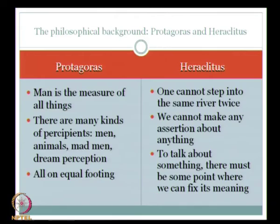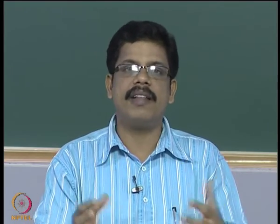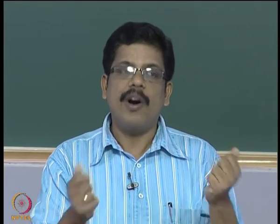To talk about something, there must be some point where we can fix its meaning — that is the point Plato was asserting. For example, to say 'Sachin Tendulkar is a cricketer' necessitates that we fix the meaning of 'cricketer.' Sunil Gavaskar and others were once cricketers but are no longer so — so what do you mean by a cricketer? Plato would say there is an ideal cricketer, the essence of being a cricketer, to which all these people participate when they play cricket.